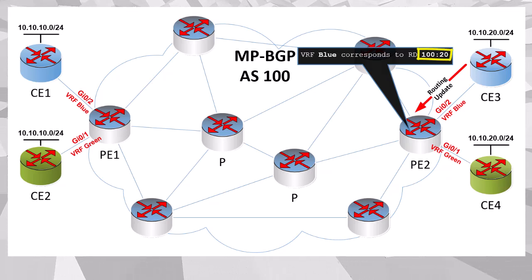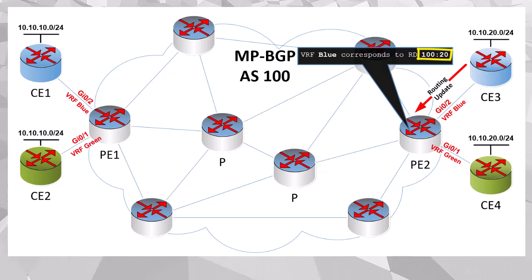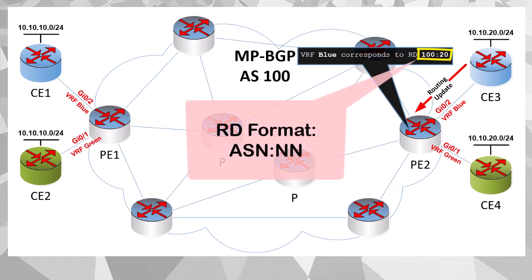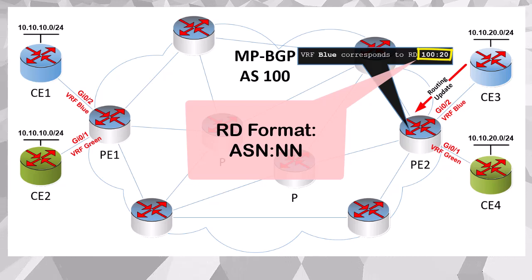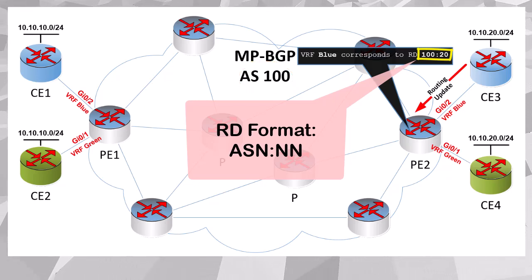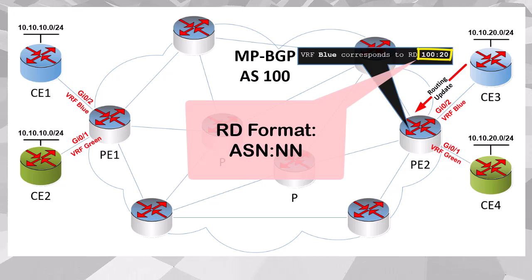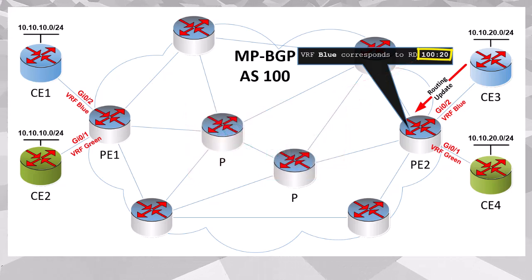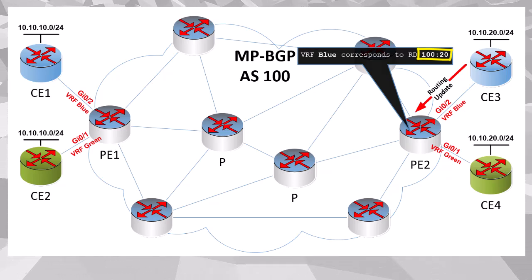The RD is something we configure ourselves. We see that VRF blue corresponds to RD 100:20. This RD value is a 64-bit number, but we often write it in this format with two 32-bit numbers separated by a colon. The first number is that of the BGP ASN, which in our case is 100, and the second number is an arbitrary number. You can actually use any values you like within the range, but the use of the ASN is simply a convention that is often followed. So this is our RD for VRF blue.